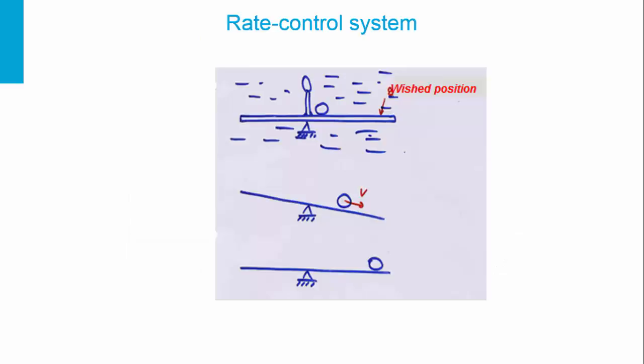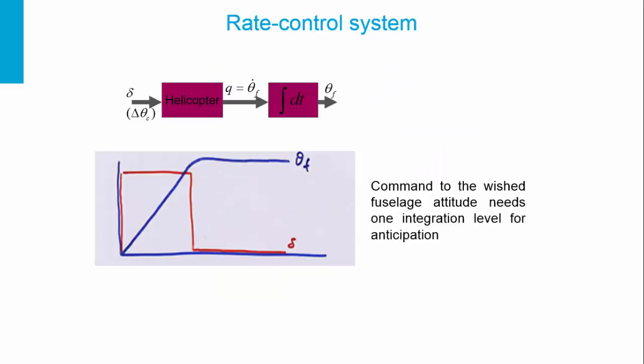In a rate control system, to move the ball from one position to a desired position, you move the plate to build velocity and then move it horizontally to achieve the end position. For a helicopter in rate control, we need one level of integration — give input and return to neutral position.